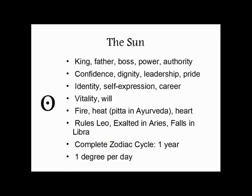In both Western and Vedic astrology, the Sun, the Moon, and the Ascendant are the three most important points in the chart. But in practice, they would treat the Sun as the least important of those three. The reason is that the Sun is the soul, the Moon is the mind, and the Ascendant is the body.